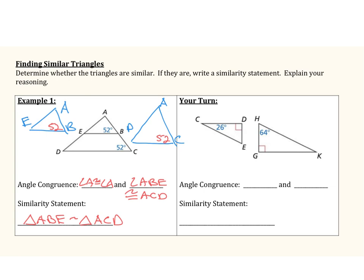Now let's see how you did. We're going to use the property that triangle angles add to 180 to help us solve this. The two angles can be subtracted from 180 to find the missing angle, angle E — which comes out to 64 degrees. For the other triangle, subtracting the 64 and the 90 from 180 gives the missing angle of 26 degrees. Based on that information, I can say angle C is congruent to angle K, and angle E is congruent to angle H. With two sets of congruent angles, these triangles are similar by the angle-angle theorem.